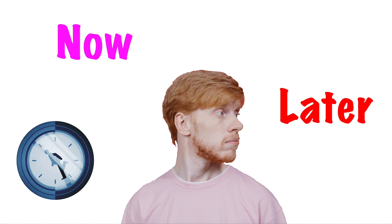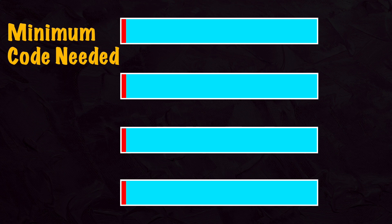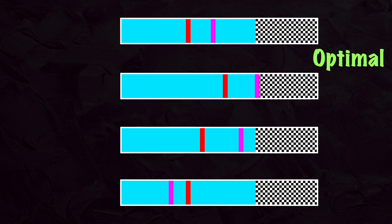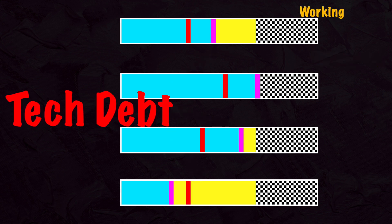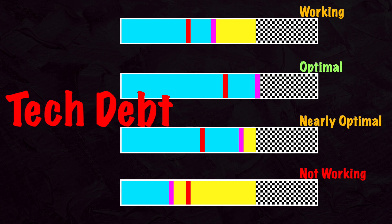Let me explain with an example. Imagine we are working on a large application broken down into smaller coding projects or feature stories, represented by these bars. The red line represents the minimum amount of code needed to complete the story. The pink line is the amount of code written at the time of deployment. The checkered section is considered optimal code. The yellow section represents technical debt — it is the amount of code needed to make it optimal.